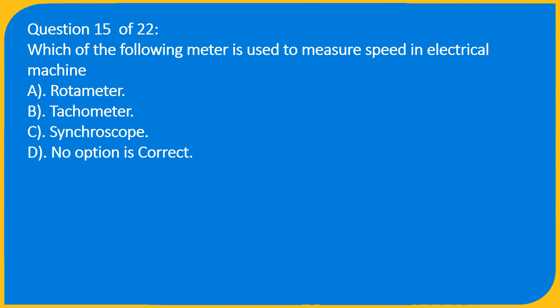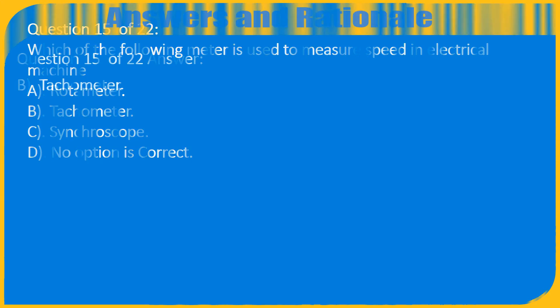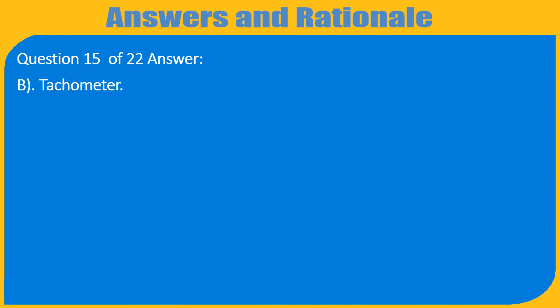Question 15 of 22: Which of the following meters is used to measure speed in an electrical machine? A. Botometer, B. Tachometer, C. Synchroscope, D. No option is correct. Answer: B. Tachometer.